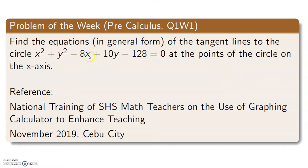Okay, so this is the problem: find the equations in general form of the tangent lines to the circle x² + y² − 8x + 10y − 128 = 0 at the points of the circle on the x-axis.